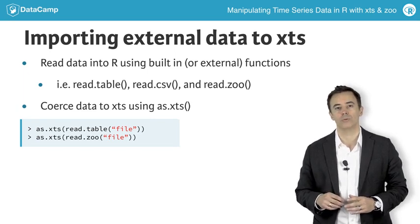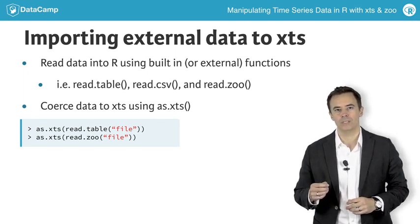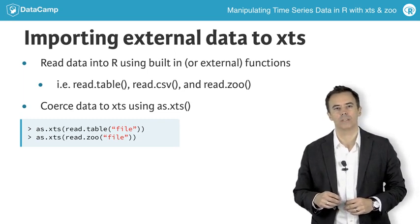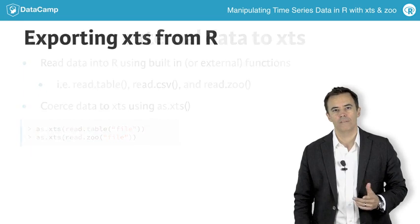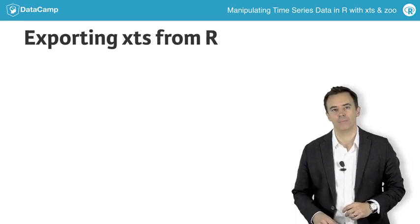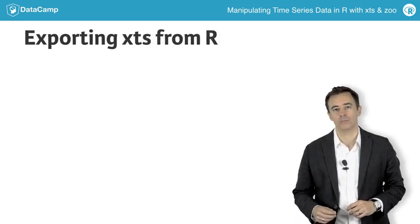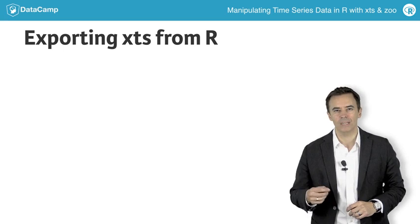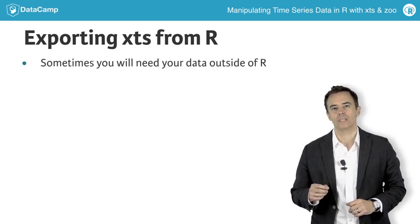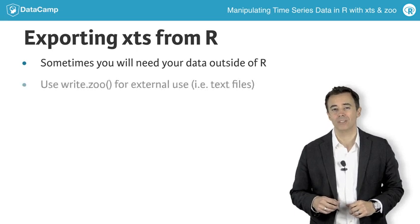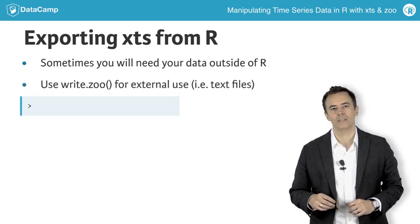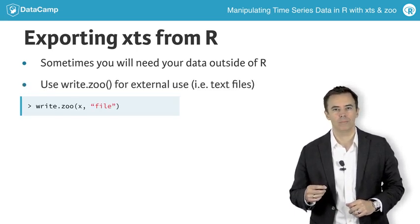read.zoo is a great tool to read in data as a time series, and once again, as.xts will dutifully convert it to its final XTS class if so desired. Finally, you might be finished with all your data manipulation and transformation in XTS and need to send it along to a process outside of R. Zoo provides a great function called write.zoo, which will do a lot of the heavy lifting of extracting and formatting your times for you.